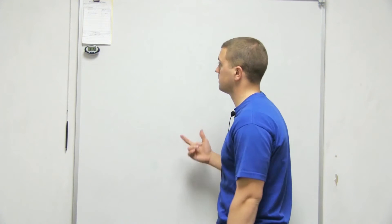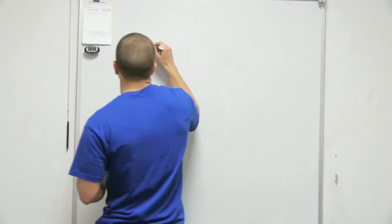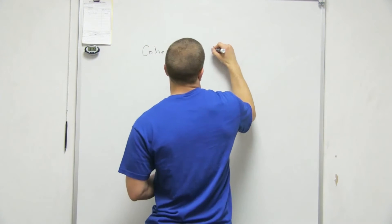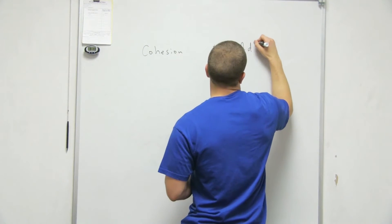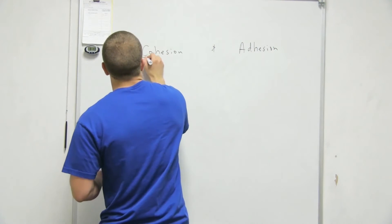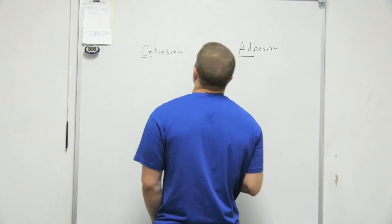We'll go over water just a little bit more. There's cohesion and adhesion. So these are two other characteristics of water.